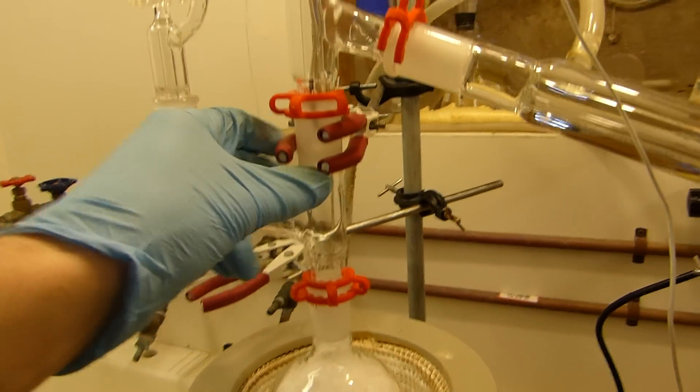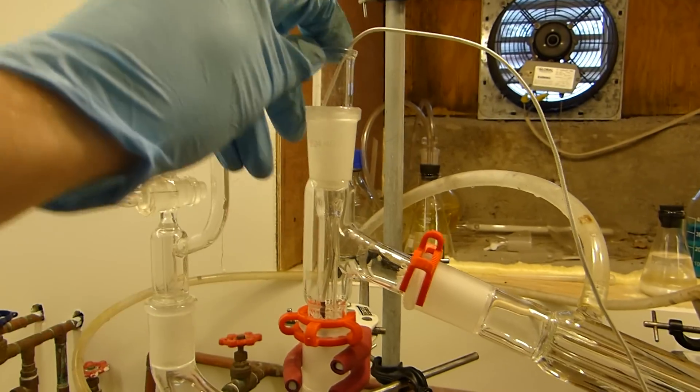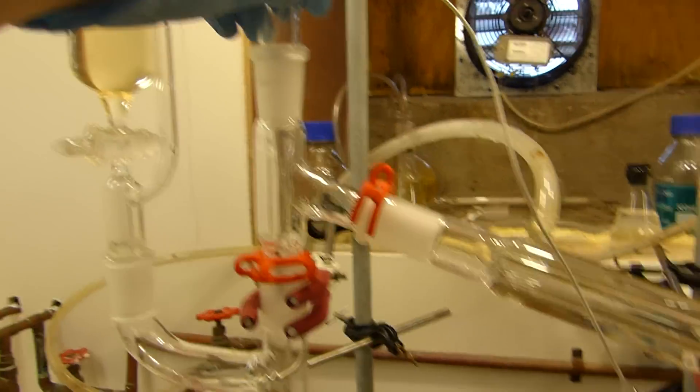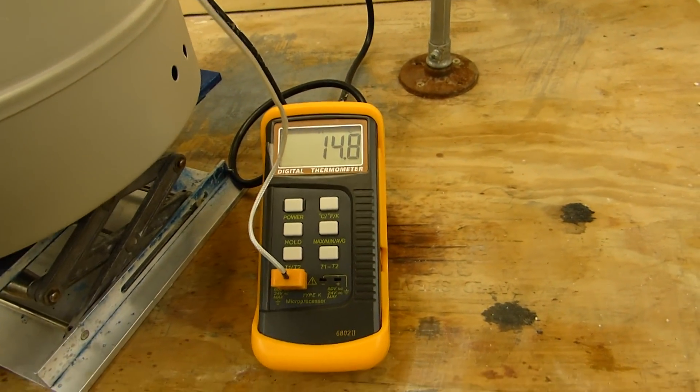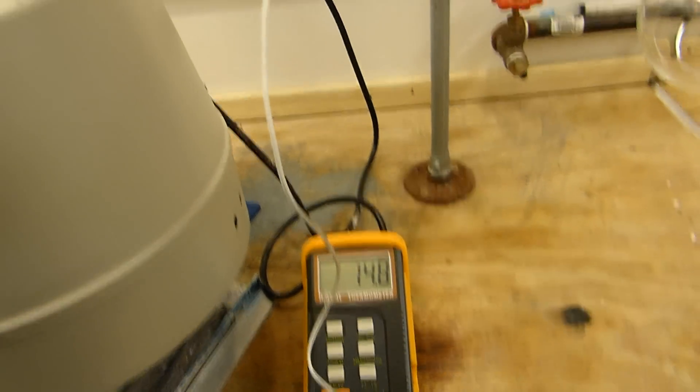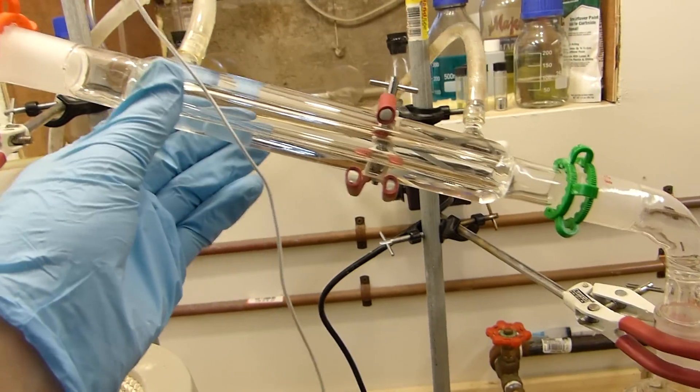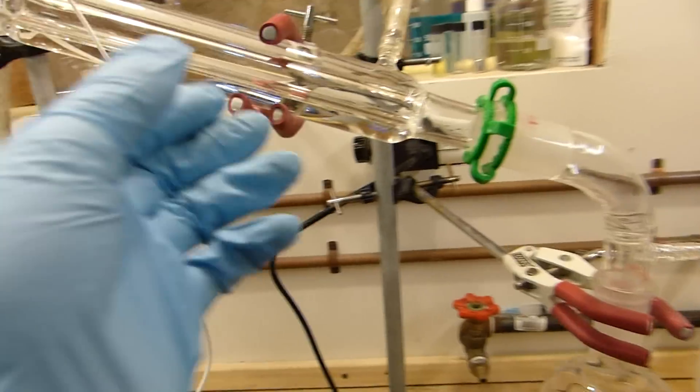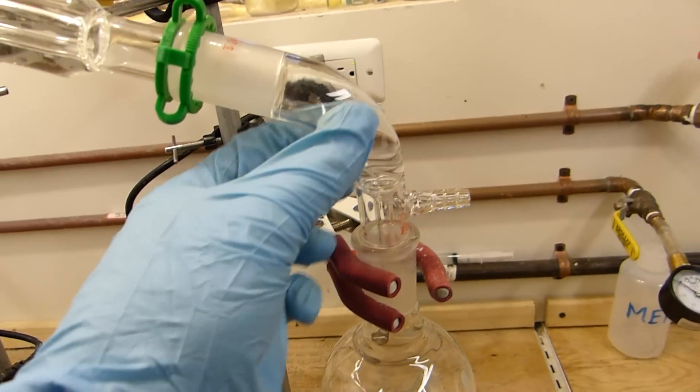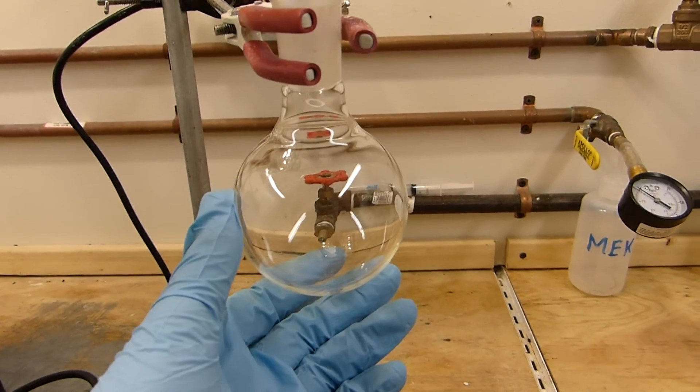And the other end of the claisen adapter, of course, is my still head, and this is just a thermal well so I can use a digital thermometer. It shows up better on camera. Let's see, we're reading about 14.8°C right now. I have a 200 millimeter liebig here with the water on, and of course my vacuum takeoff and the receiver.